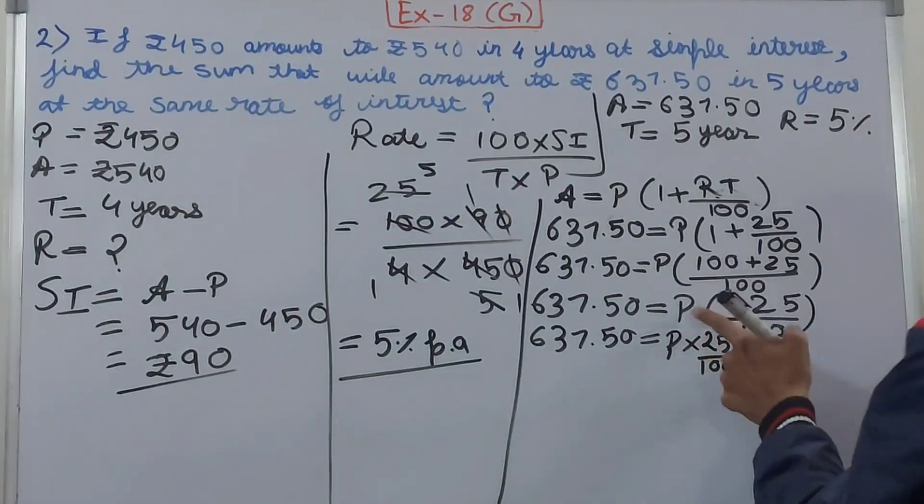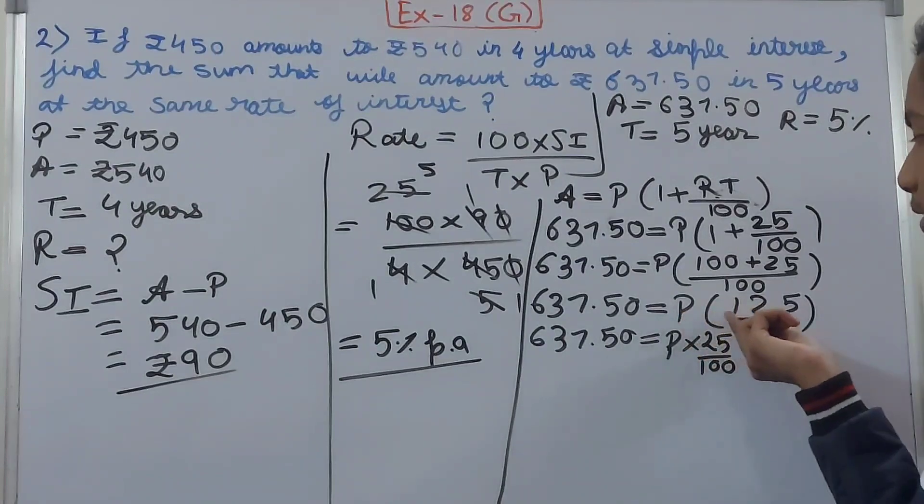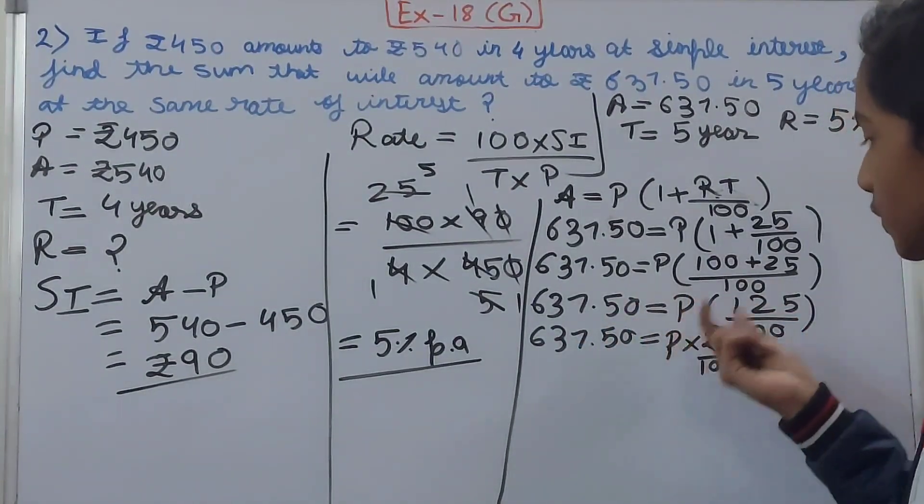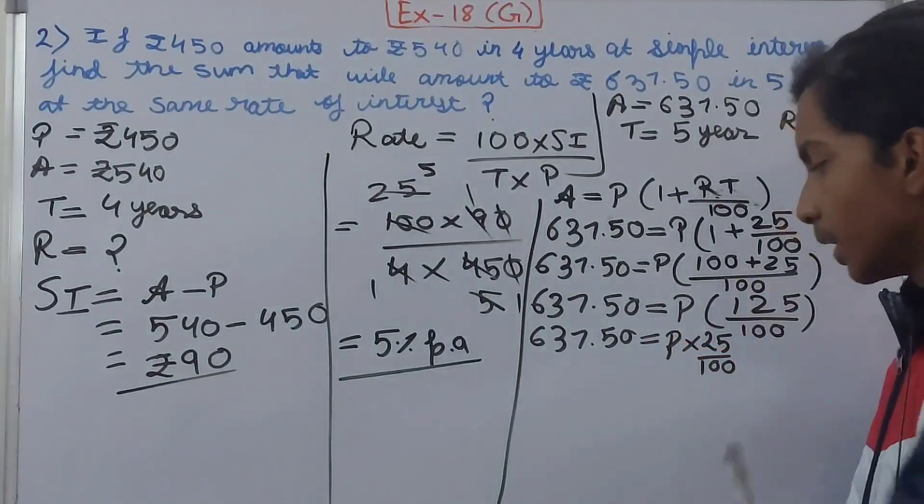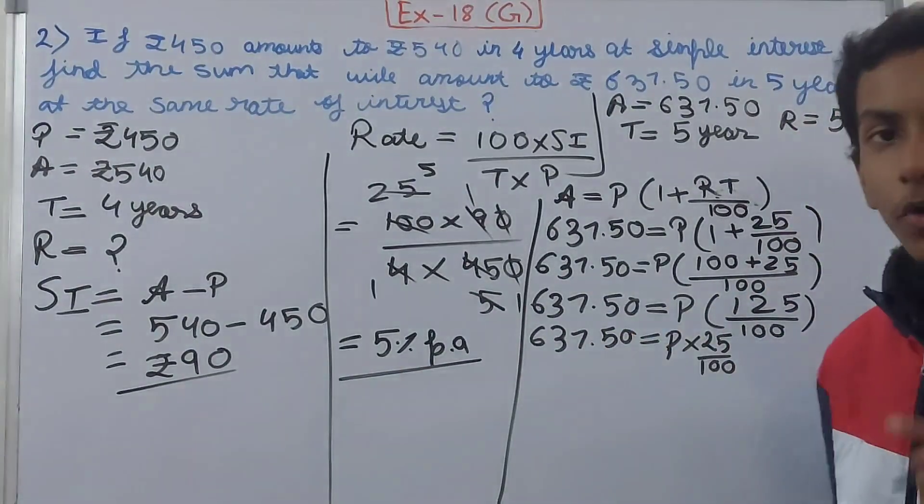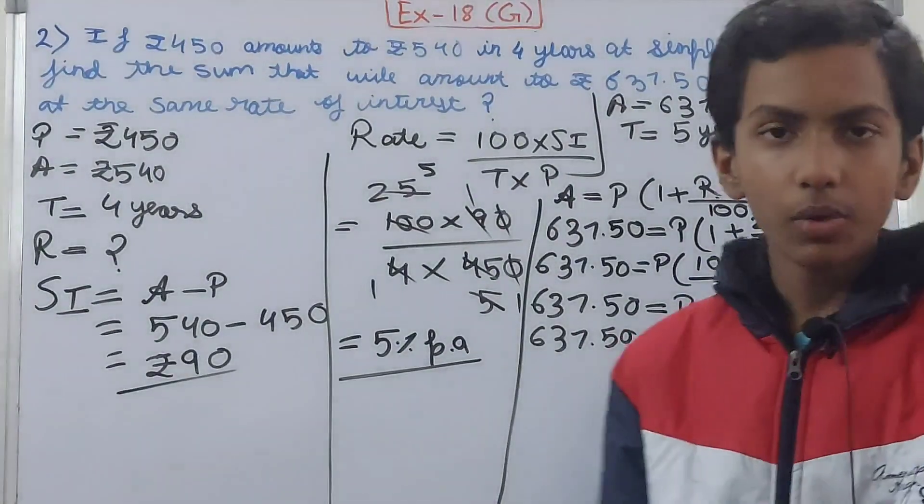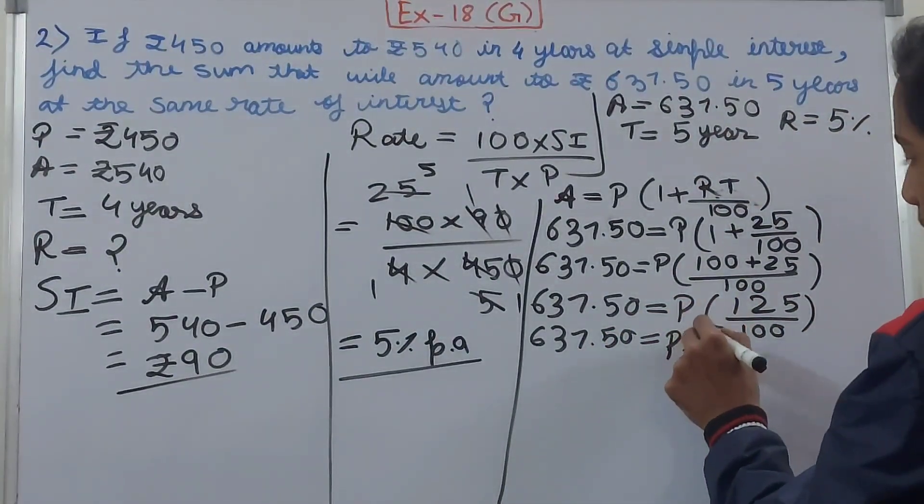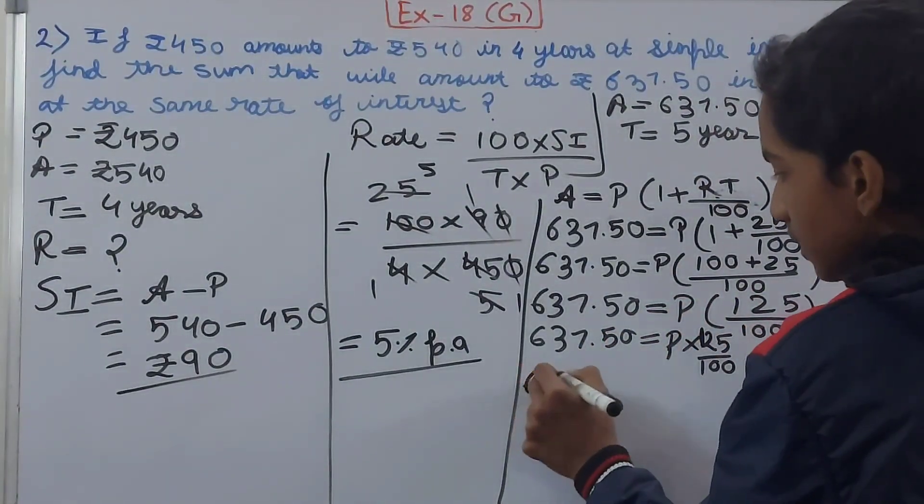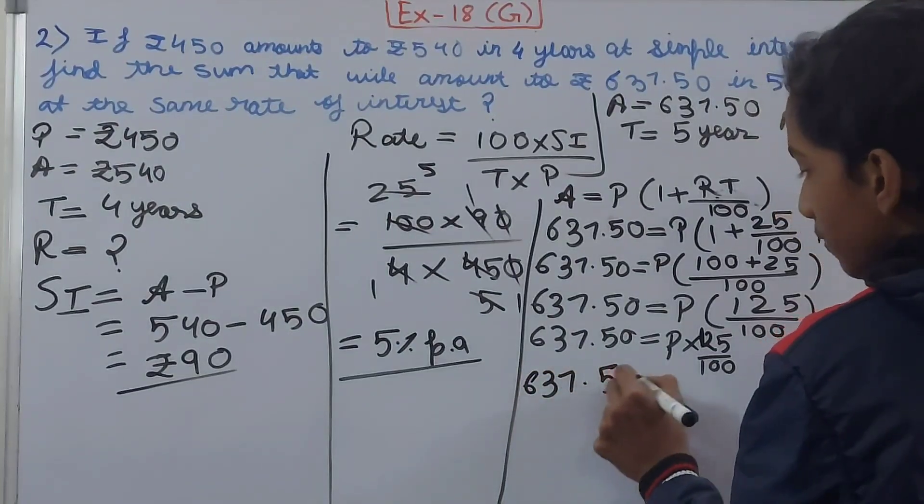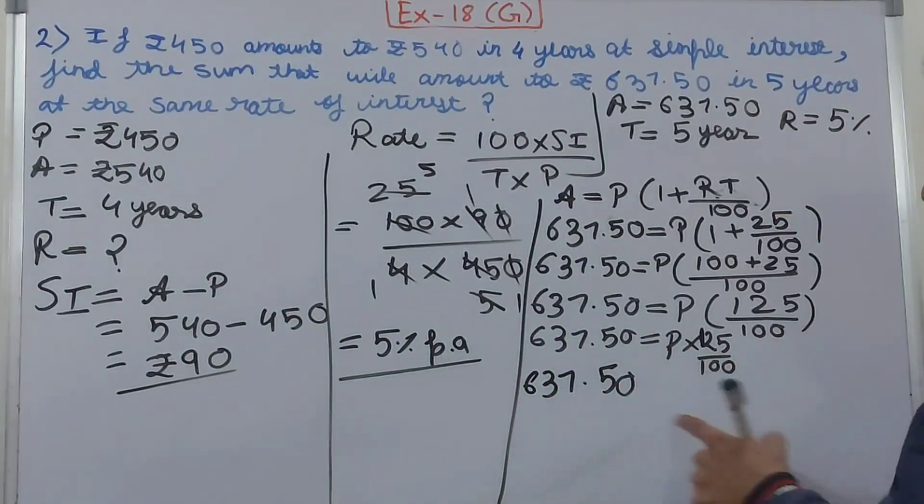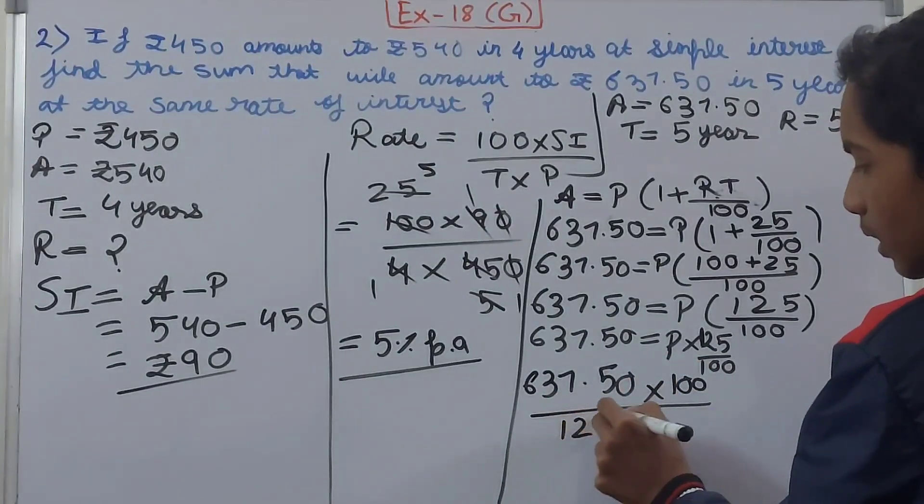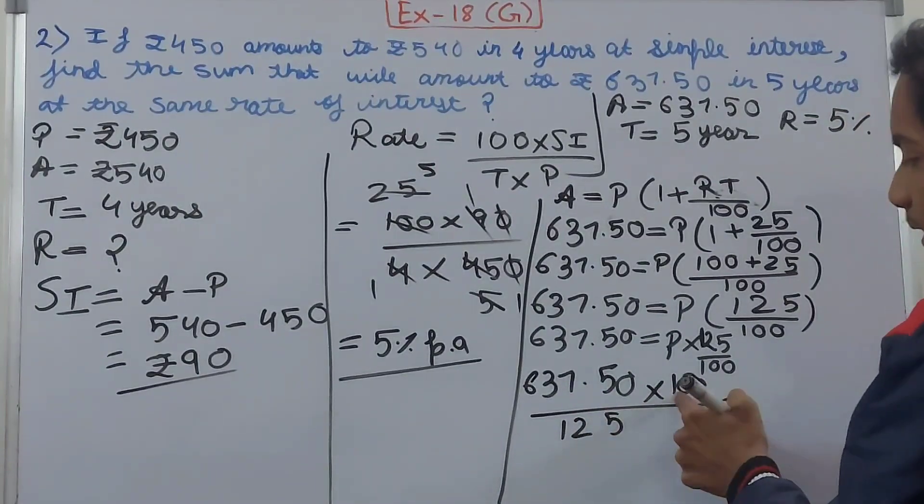So ₹637.50 equals to P × 125/100. When this bracket will open, you see there is no sign between principle and the bracket, so what happens is this thing multiplies. No division, no addition, no subtraction, just multiplication here. So ₹637.50 = P × 125/100. This will come here, so ₹637.50 × 100/125.